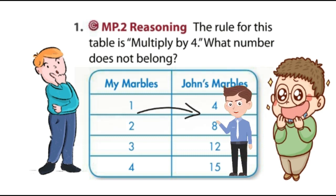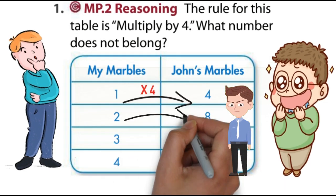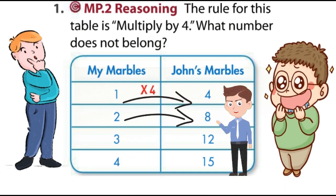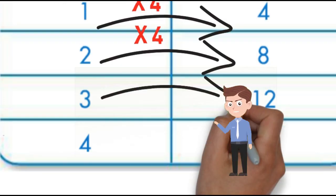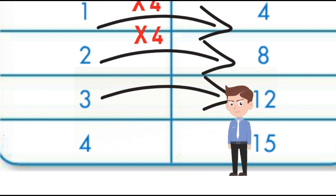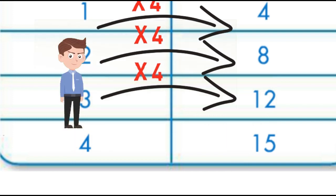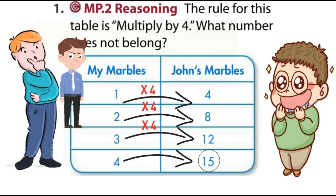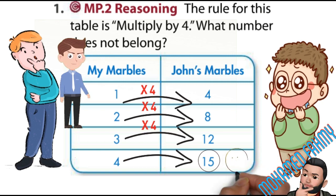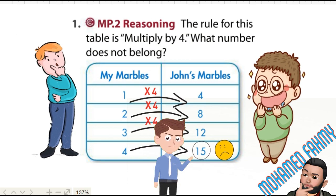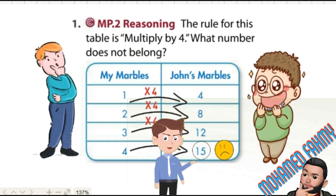By multiplying one by four you will get four, two by four will get eight, excellent. Three by four will get 12, good. Four times four is 16, exactly, not 15. So 15 doesn't relate to this pattern. So the number which doesn't belong is 15.